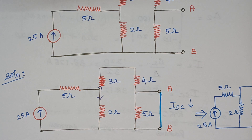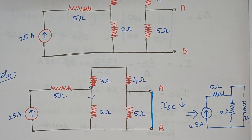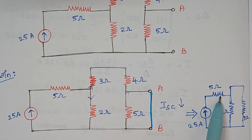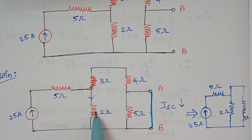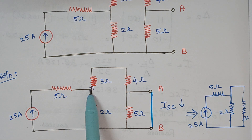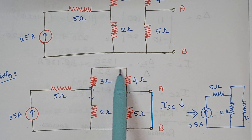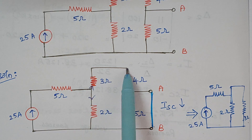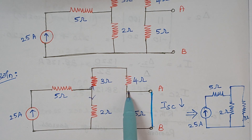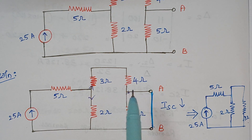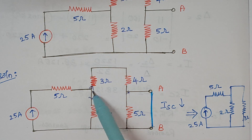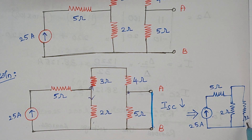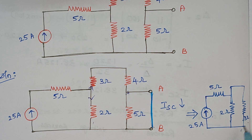When you redraw this circuit, we have 25 amps, this 5 ohm, and again 2 ohm, and the current flows through this 3 ohm and 4 ohm and through this wire. So 3 plus 4 are said to be in series. Therefore here I have drawn this 2 ohm parallel to this 7 ohm.